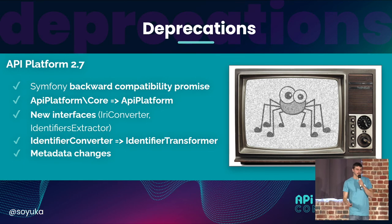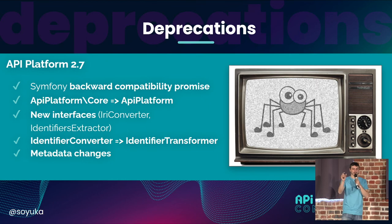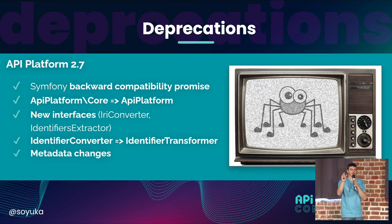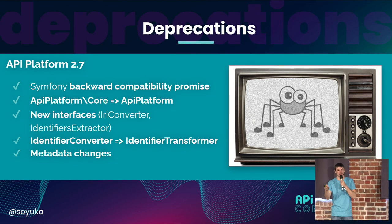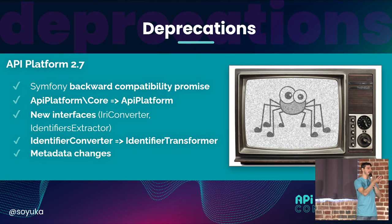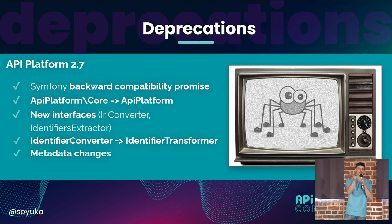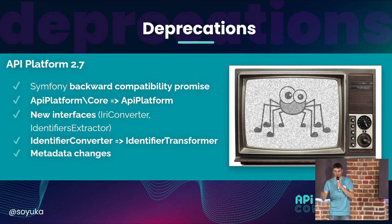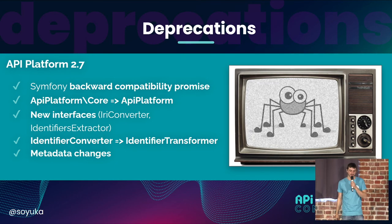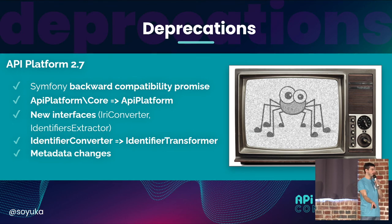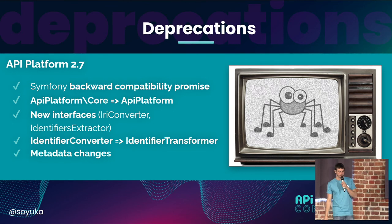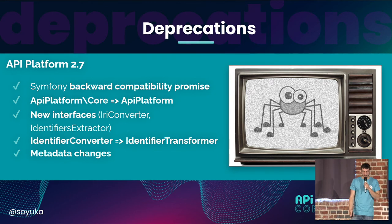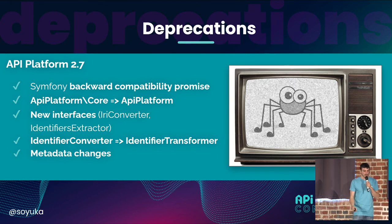The identifier transformer is a class you can use when you have a parameter in your URL which is usually a string — for example, user dash 1, where 1 is a string — but in your class it is an integer. So you need to change the string to an integer and you would use this identifier transformer. The converter was introduced in 2.5. And obviously we have the metadata changes.